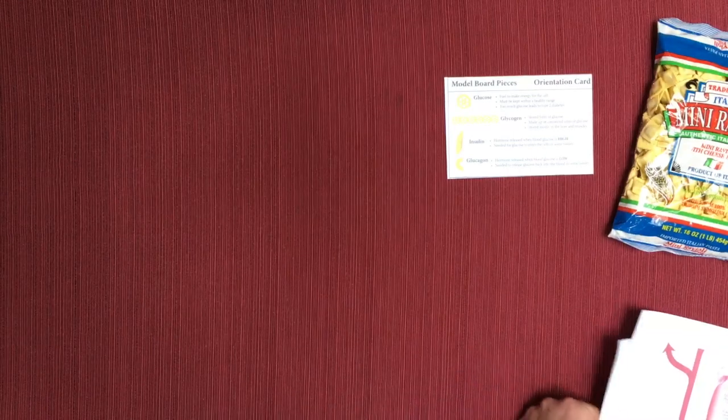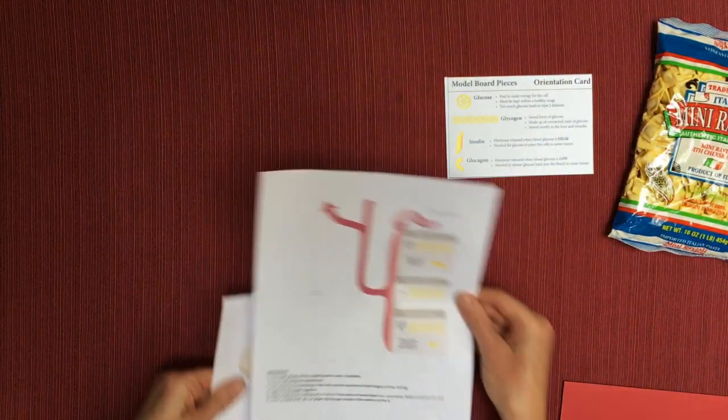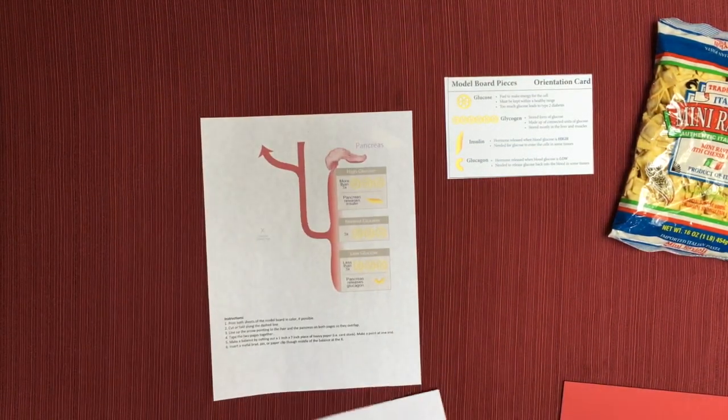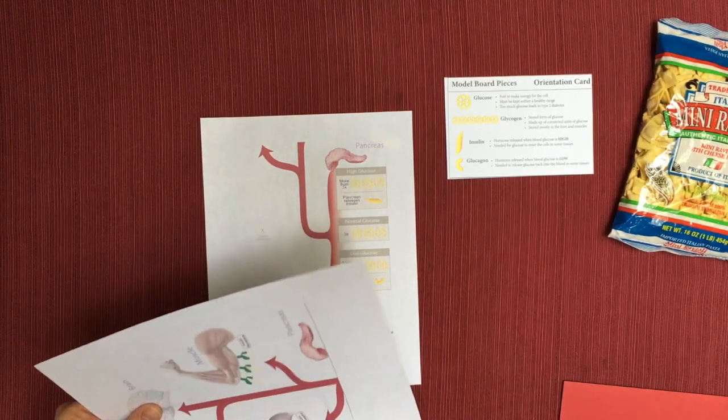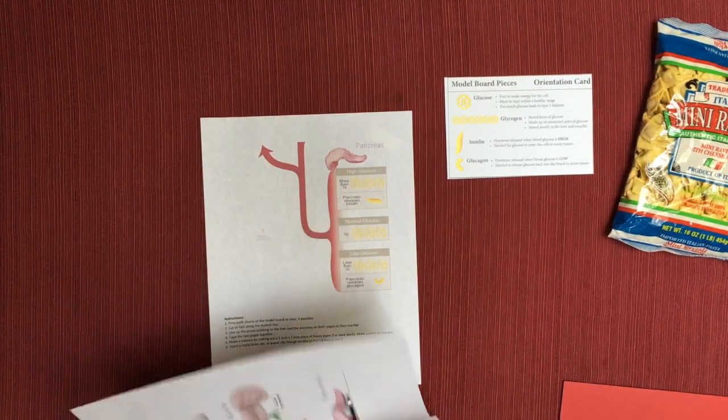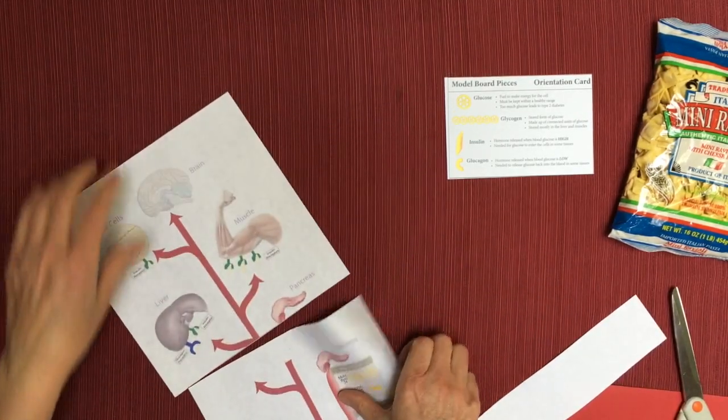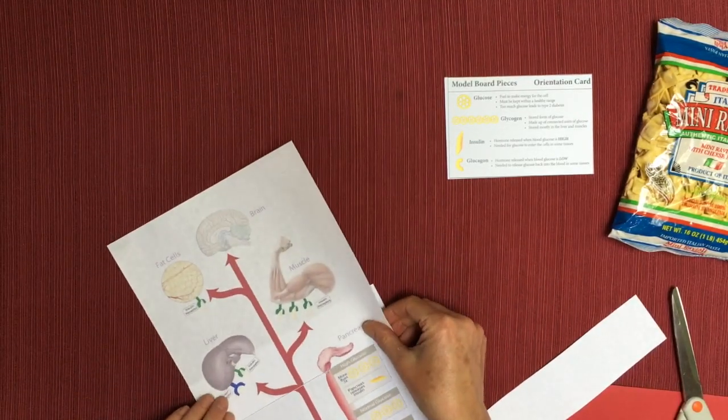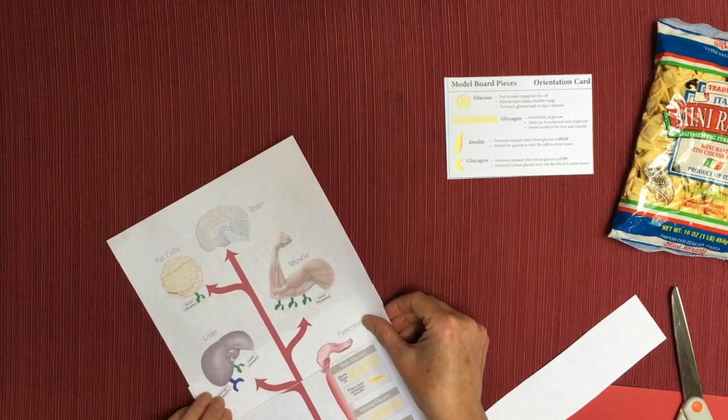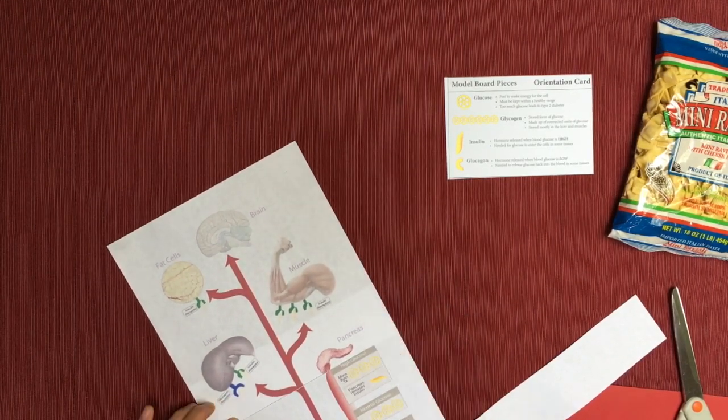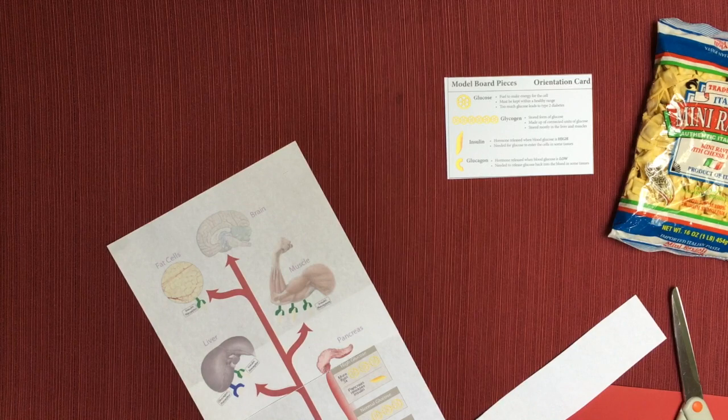Well, fear not. You can go to the comment section below and print out your own model board. After you print it out, cut along the dotted line. You're going to put these overlapping so that the pancreas lines up and some arrows line up. Tape it together.